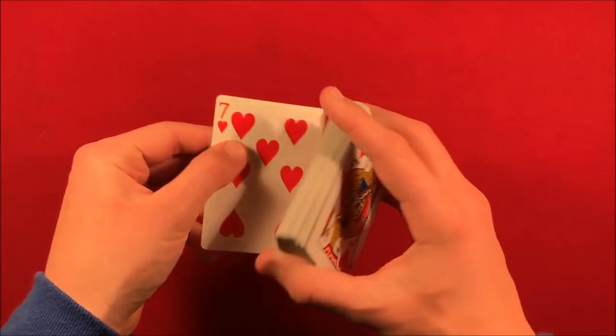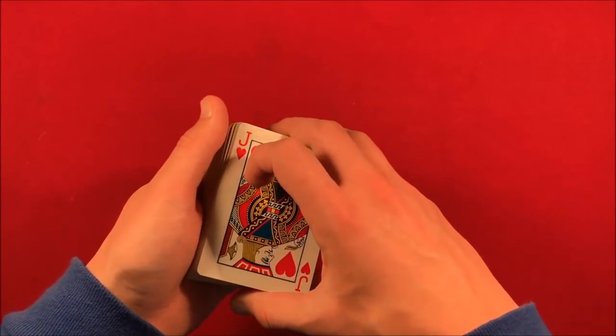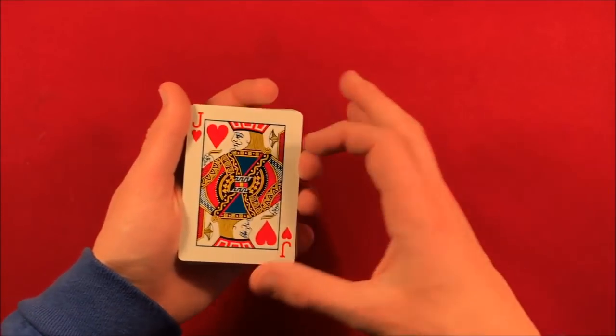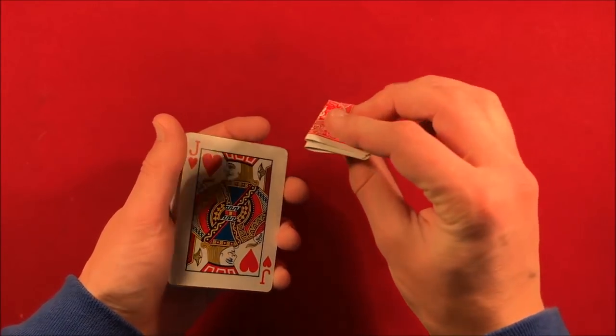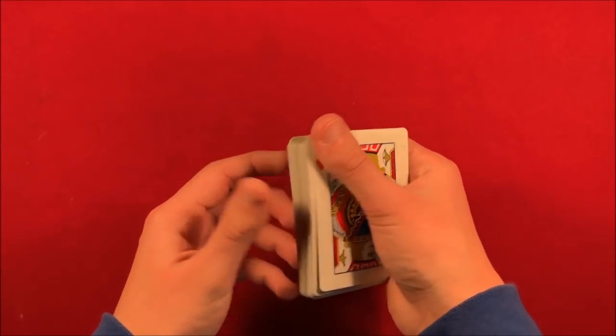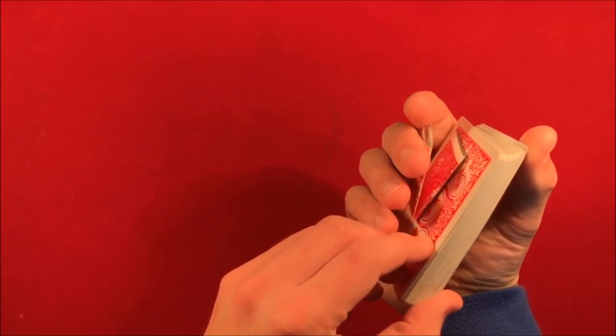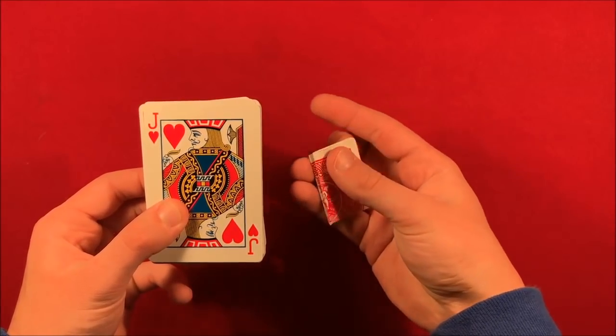Essentially what he does is he takes the spectator's card, which is on top, deck is face up, and he folds up the card while misdirecting the spectator. The card is going to be in fourths, okay. That card is now going to be like this at the bottom of the deck underneath his right hand at this point.